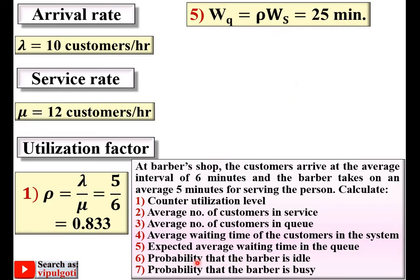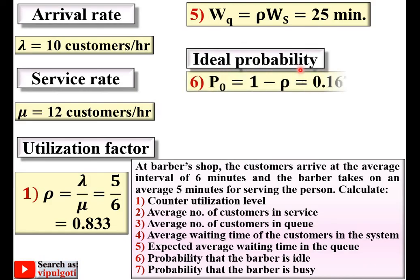The probability that the barber is idle means the barber is free — there is no utilization of the shop. This idle probability is denoted P0, meaning the probability of zero customers in the shop. It equals 1 minus rho, so 1 − 0.833 = 0.167. This is the ideal probability.